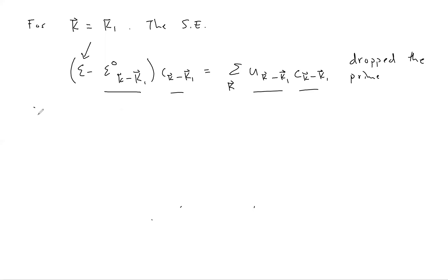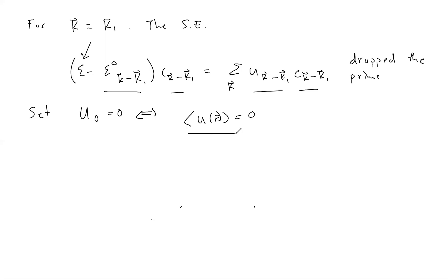To make our lives easier, let's set u(0) equal to 0. This just means that the mean value of the potential is 0. The zeroth Fourier component is just the mean value of the potential, and by adding an offset — which won't change the physics — we can make the mean value of the potential equal to 0, so the zeroth Fourier component equals 0.